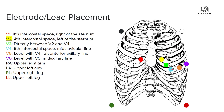V5 goes in between V4 and V6. V6 is at the mid-axillary line, lining up with underneath the armpit. Then you've got your right upper arm lead, your left upper arm lead, and then your leg leads.